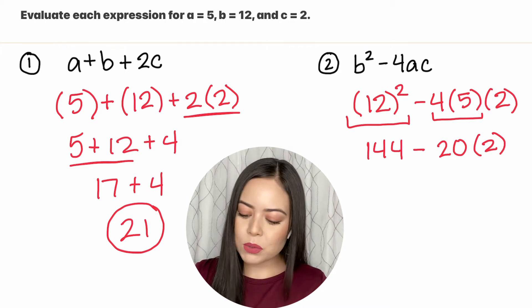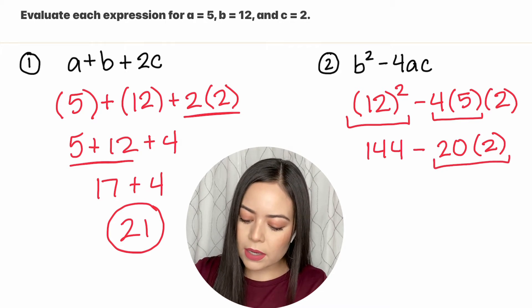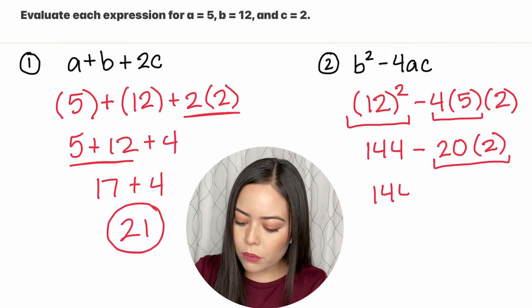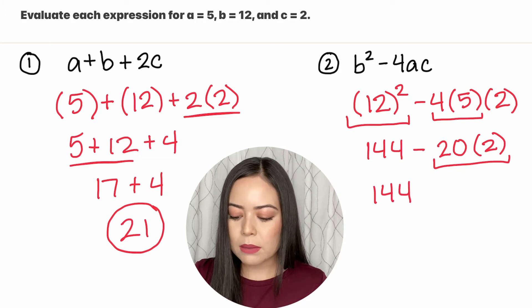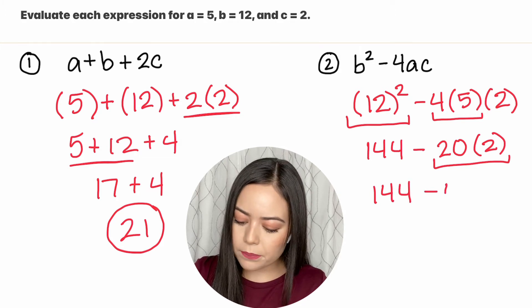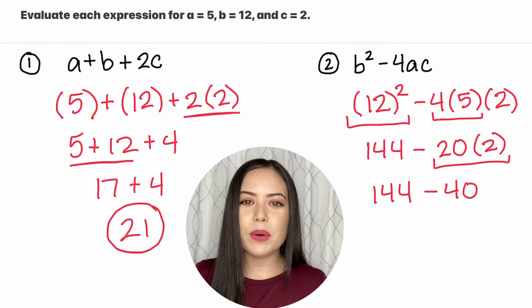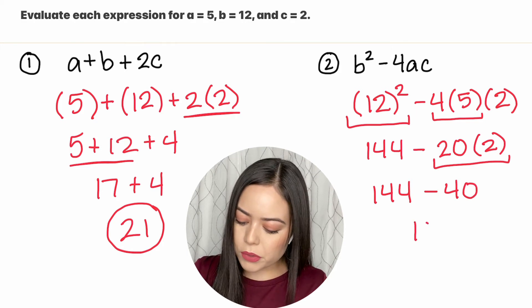Let's continue to multiply on the right hand side. So we bring down the 144, negative 20 times 2 is negative 40, and 144 minus 40 is equal to 104.